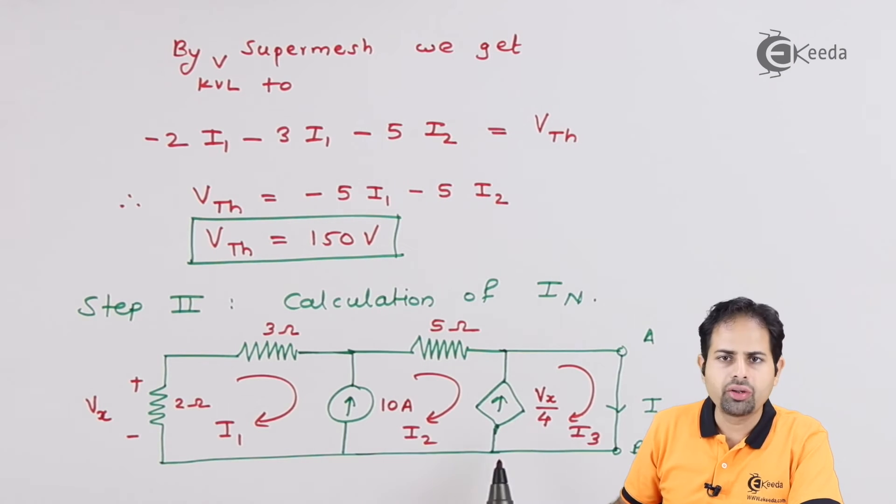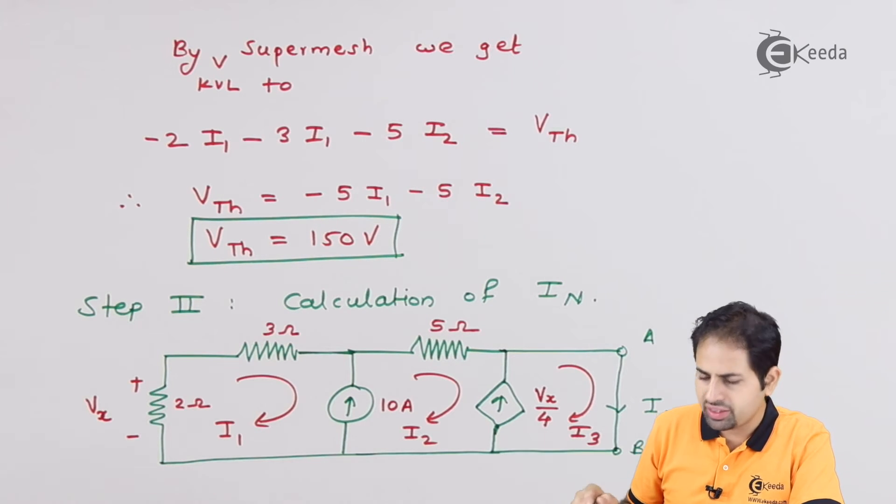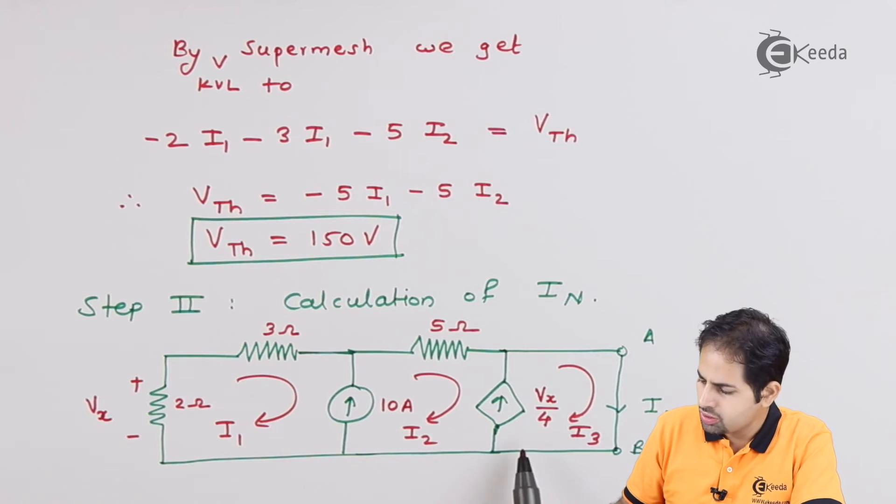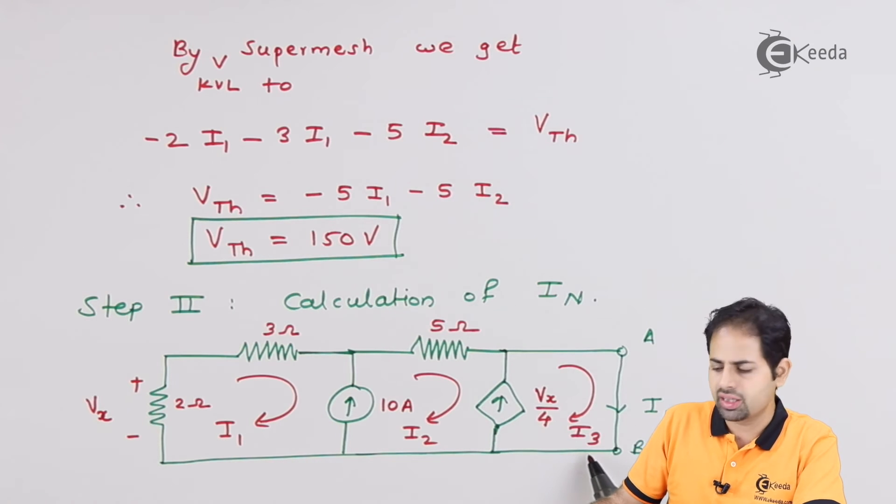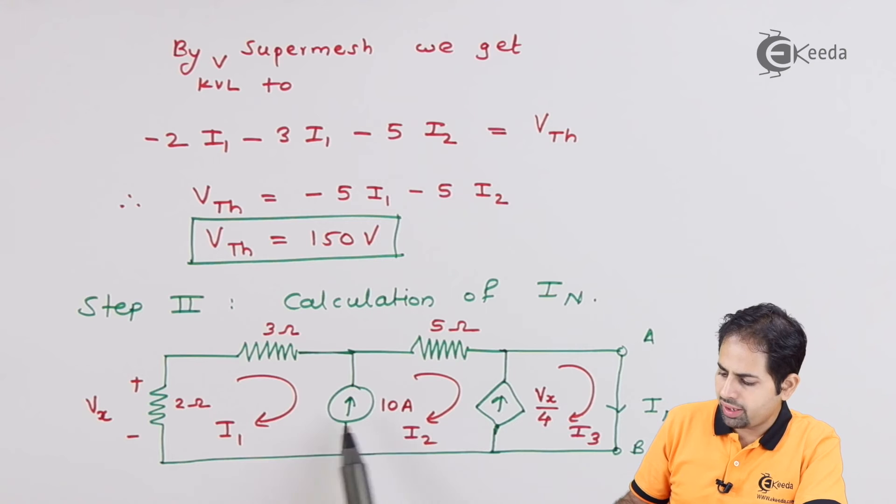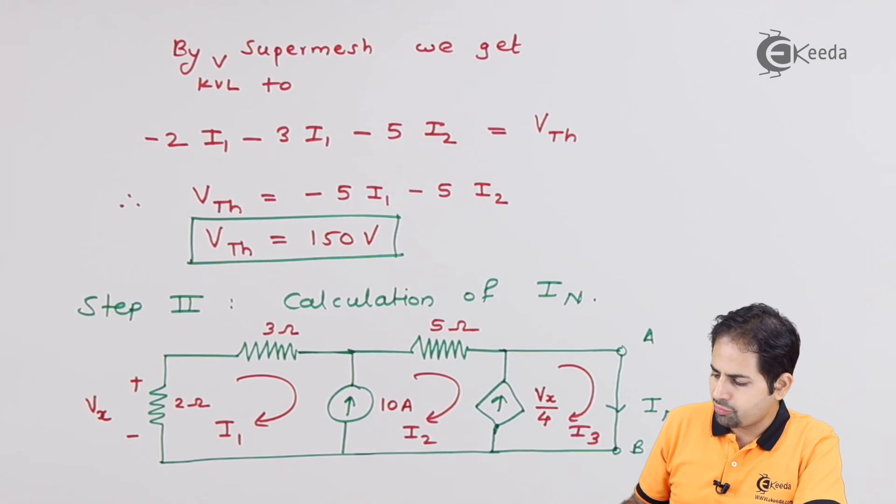So here we have written all the values and I1, I2, I3, three currents in three loops. And we know that if I want to find IN, I need to find what is I3. So again, I will apply here I2 minus I1 equal to 10.